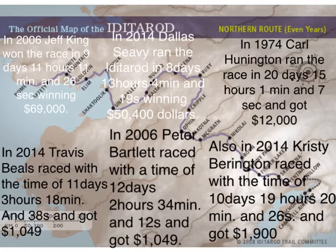In 2006, Peter Bartol raced with a time of 12 days, 2 hours, 34 minutes, and 12 seconds, and got $1,049.